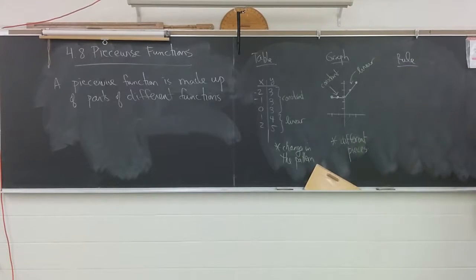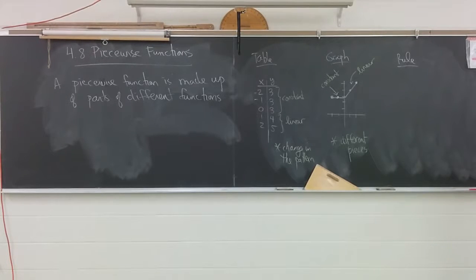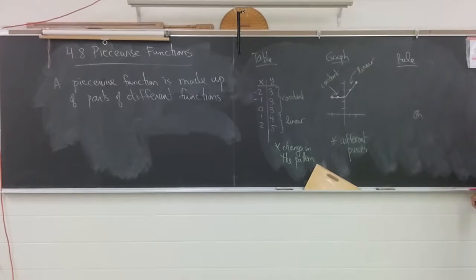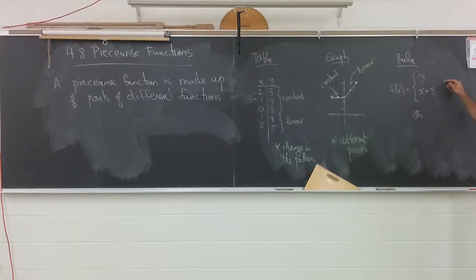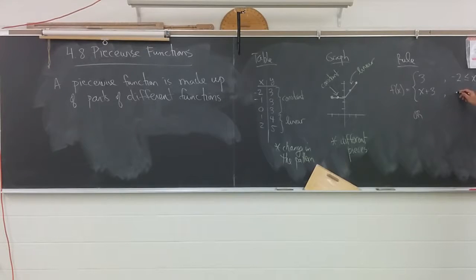Hence the word piecewise. Now the graph, once you have it, is really not a problem - you can all read that graph. The rule is going to be the messy part. So here is what I'll write for this one: f of x equals - and this is a big curly bracket, called brace brackets. There's a 3 here, and an x plus 3. These are commas.